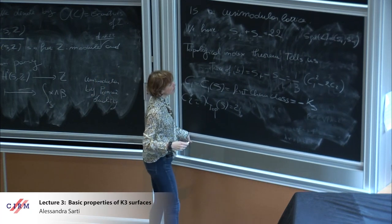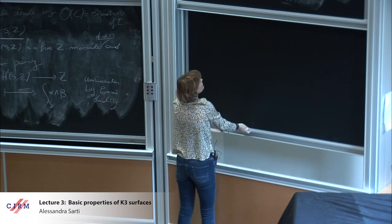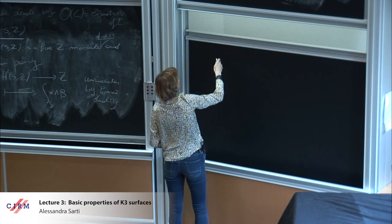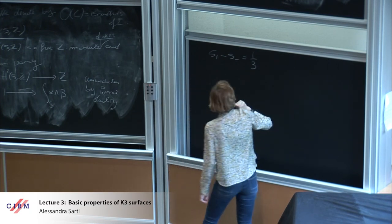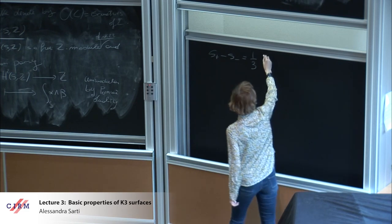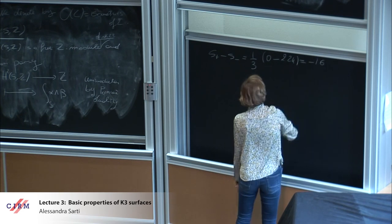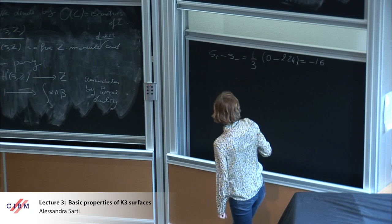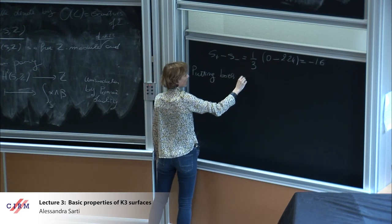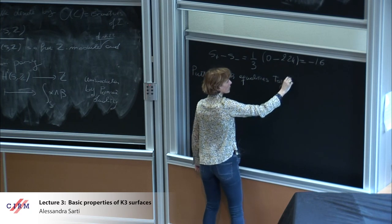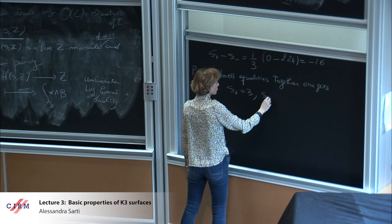Let us compute: S+ minus S- equals (1/3)(c1² - 2c2). Since c1 = 0 for a K3 (canonical class is zero) and c2 = 24, we get (1/3)(0 - 48) = -16. Combining both equalities, one gets S+ = 3 and S- = 19.